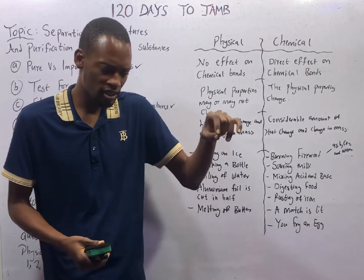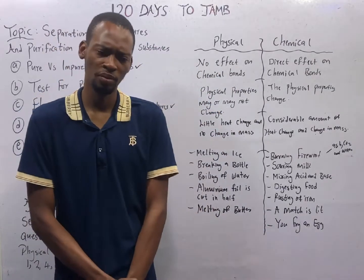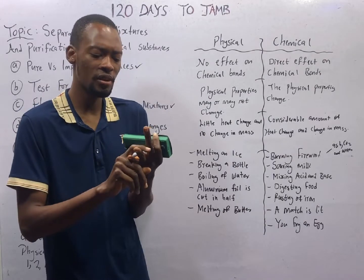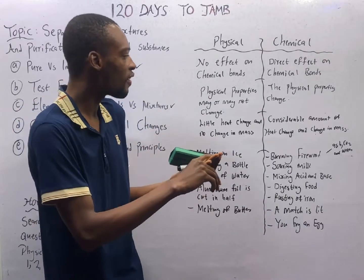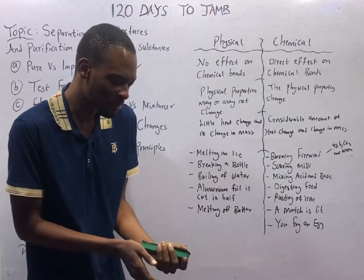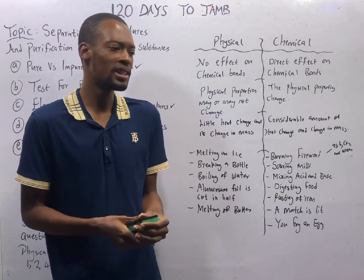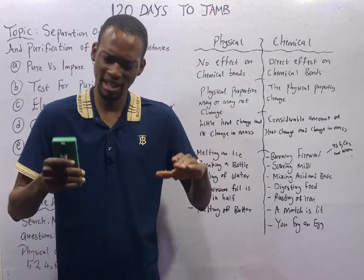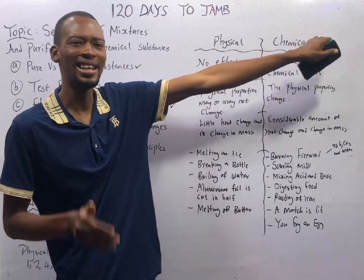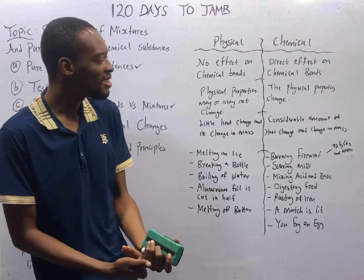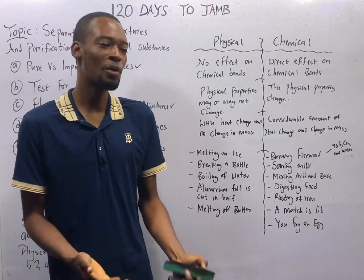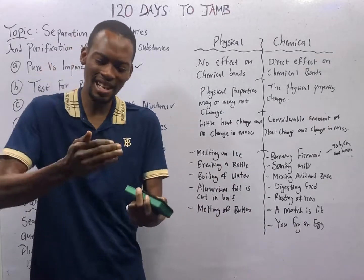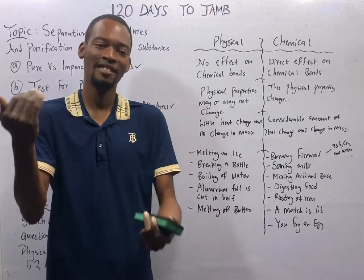Let's look at burning of firewood. When you burn a log, it changes to ash, carbon dioxide is given off, and water is produced. When you burn in the presence of oxygen, carbon dioxide and water are usually given off and the log or firewood changes to ash — a new substance has been formed. For chemical changes, they are not easily reversible. You cannot change the ash, carbon dioxide, and water back to firewood. A new substance is formed, and there is a change in both chemical and physical properties of the matter.